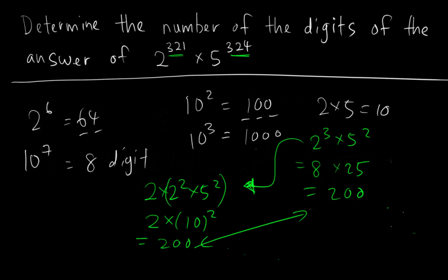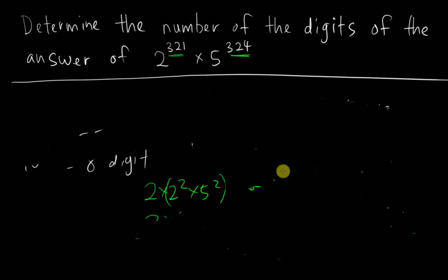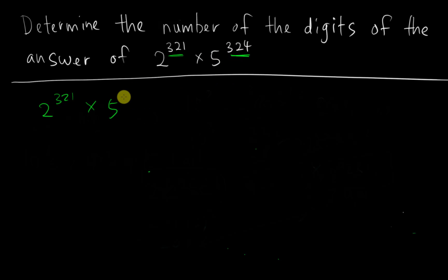Because of this idea, I get the approach to solve this question. The first step is to make both bases have the same power. So for 2 to the power of 321, I want to split 5 to the power of 324 so that part of it matches. I can write it as 5 to the power of 321 multiplied by 5 to the power of 3, because 321 plus 3 equals 324.